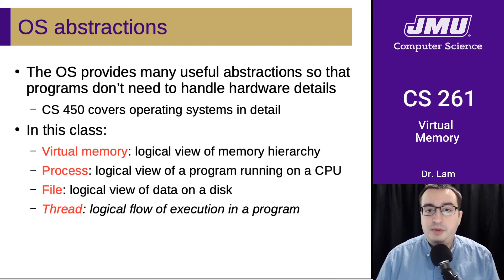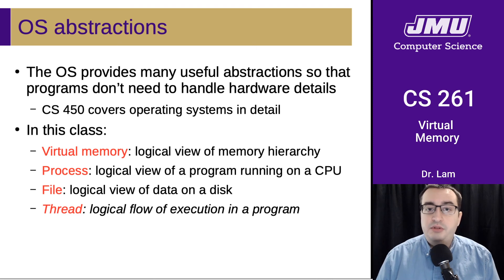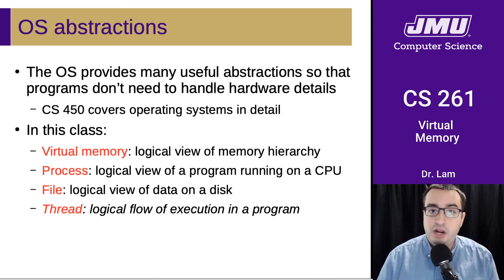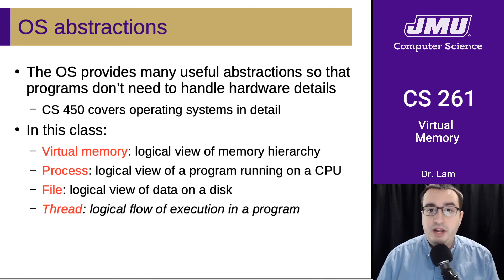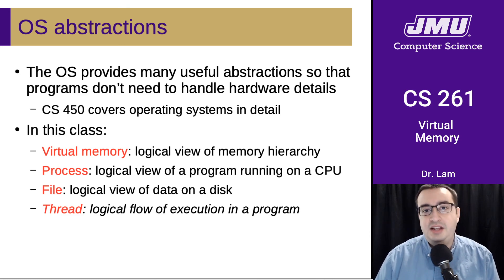The first abstraction is virtual memory — that's what we're talking about today — which is a logical view of the memory hierarchy, the actual memory in the hardware. We're also going to talk about processes, which is a logical view of a program running on a CPU. And we're going to talk about files, which are a logical view of the data stored on disk. We may also talk about threads, which are a logical flow of execution in a program — a sneak peek at the sorts of things you'll tackle in the next systems course, CS 361.